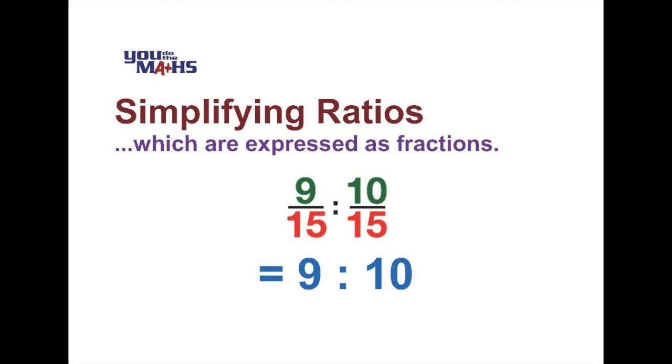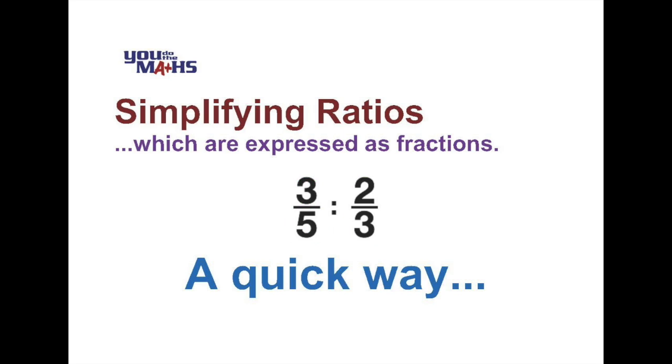Let's have a look at a quick way we can simplify ratios that involve fractions using the same principle that we just looked at but in a couple of easier steps. What we can do is identify the numerator and the denominator for the fraction on the left and multiply it by the opposing denominator and numerator on the other fraction.